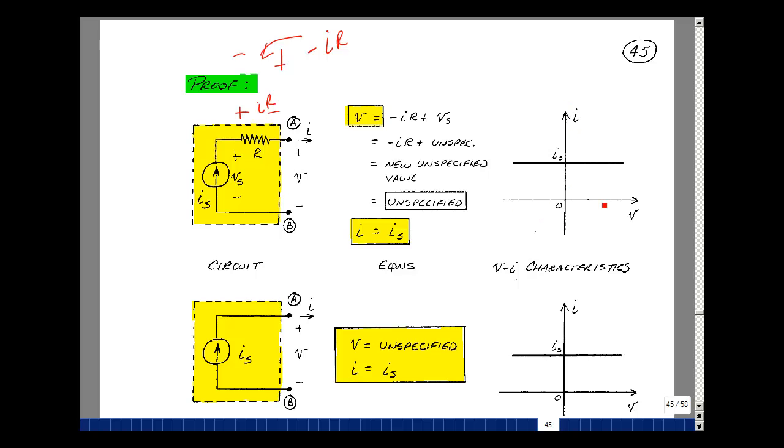Okay, let's just graph this. Let's assume that I sub S is a DC or constant value. So here we've got a value of I sub S. The voltage across it can be positive, it can be negative, it could be zero. Now to be equivalent to this, we need the same graph or picture.